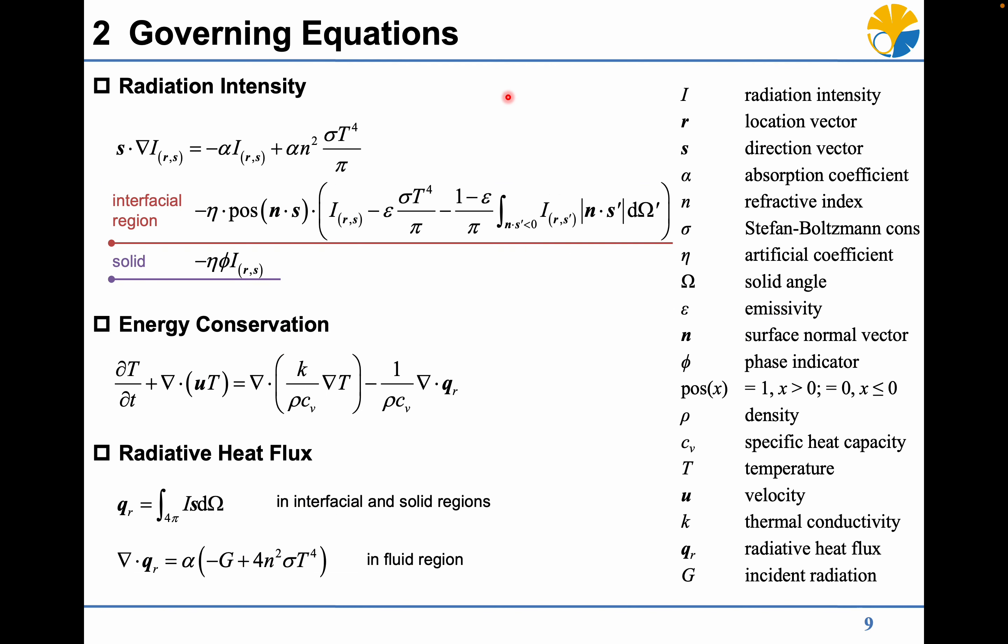After that, the boundary condition is introduced as a volume penalization term into the governing equation. Another term is also introduced to make the radiation intensity become zero inside the solid region. The conservation of energy equation is also considered to solve temperature fields, while the radiative heat flux is introduced as heat source.